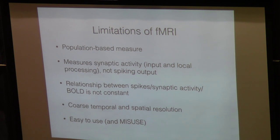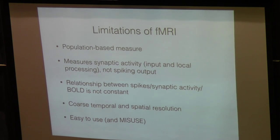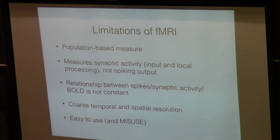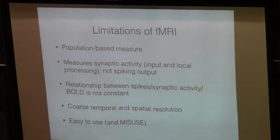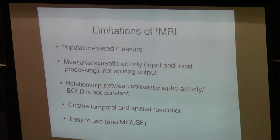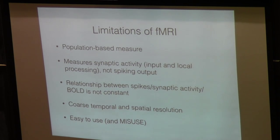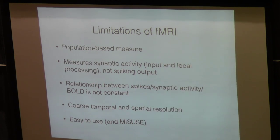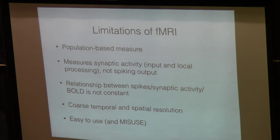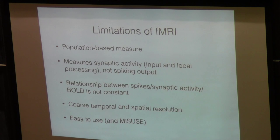The limitations of fMRI are: you're taking a population-based measure of hundreds of thousands of neurons within a cluster, so you can't look at precise activity of individual neurons. You're measuring synaptic activity — not directly measuring spiking of neurons, but the metabolic activity of groups of neurons. The relationship between spikes, synaptic activity, and BOLD is not constant; it changes from session to session and condition to condition, so you have coarse temporal and spatial resolution. One thing that's good about this technique is it's very easy to use, but with that ease also comes misuse — people do a poor job designing MRI studies.